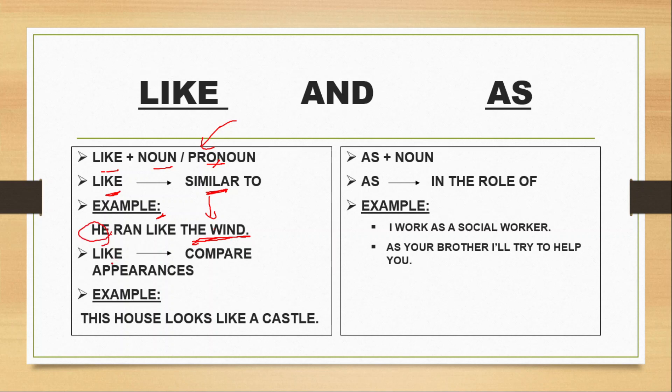Second, like you use to compare, compare appearances. Kisi saath jab hum compare, it means tulna ki jati hai. Jab hum kisi saath tulna ki jati hai to us ke saath aapka aata hai like. This is an example: This house looks like a castle. It means is ghar ki tulna kis se ki hai? Like a castle, kile se.